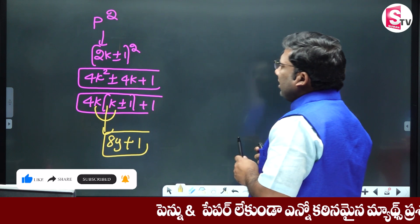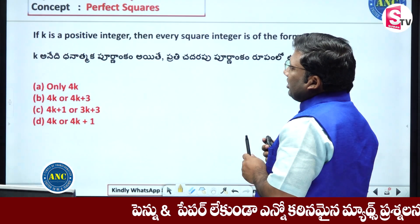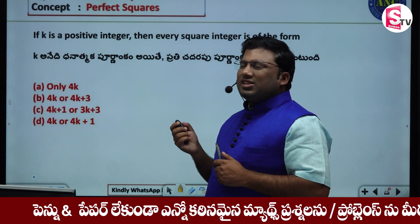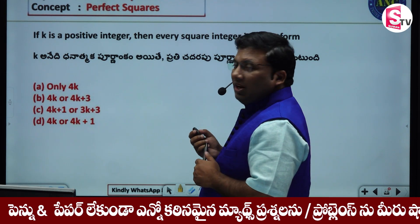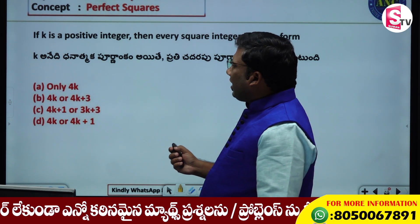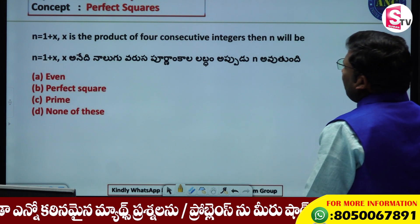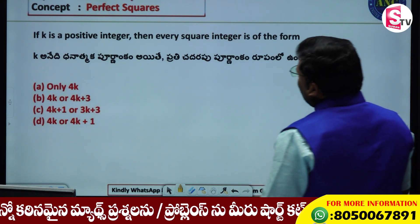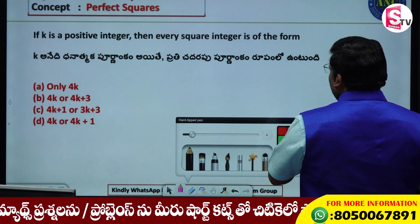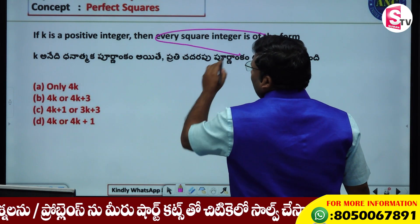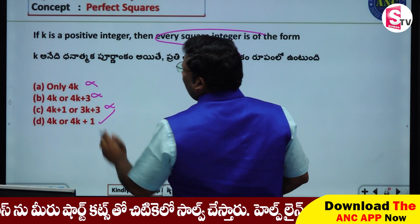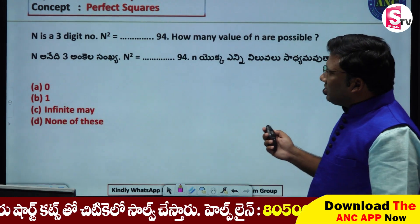The first question answer is the second statement. This is a very easy question. If A is a positive integer, the formula involves 4k and 4k plus 1 — same concepts.